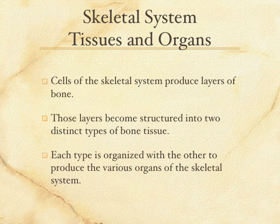You're going to see that the layers are structured into two distinct types of bone. This is where we're going to learn about compact bone and cancellous bone.